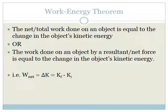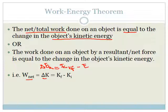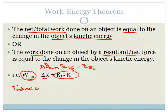What does this mean in terms of calculations? We're saying the net work done on an object is equal to the change in the object's kinetic energy. We'd write W_net = ΔK, or ΔEK, which is equal to the final kinetic energy minus the initial kinetic energy. And the work done by the resultant force gives us: F_net · Δx · cosθ = ΔK.